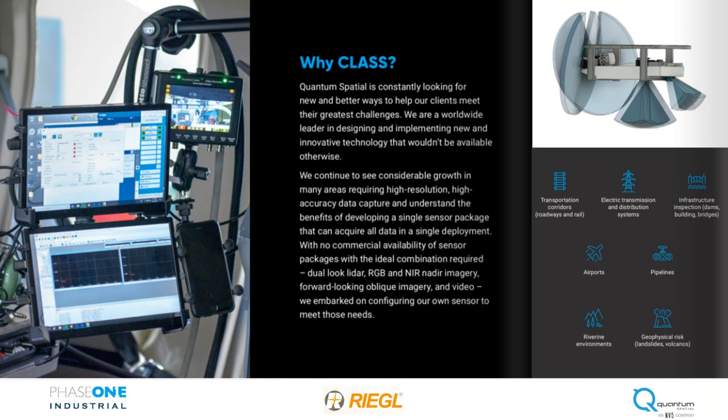In the upper right of the screen you'll see our first iteration CLASS system, as detailed in the rear of the pod with two VUX 1LR systems — one of those LRs also has the embedded APX-20 IMU so it can be quickly removed and installed on a UAS platform. Also in the pod we have configured an IXM RS series 4-band nadir camera looking down, and in the front we have the IXM 100F series oblique camera. This is all paired with an Applanix POSS 610 system.